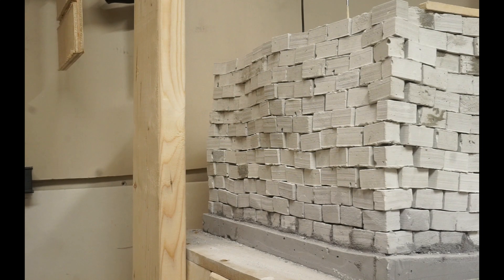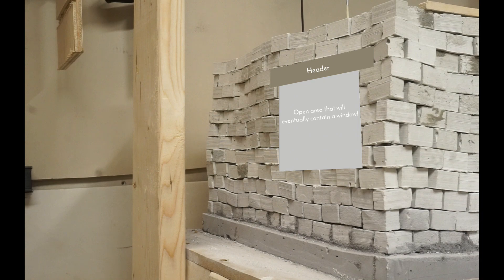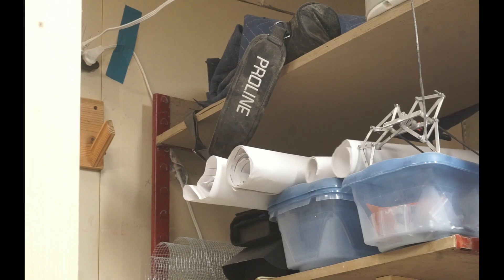There is still one type of specialty block I need: a header. This is a really long block that goes above each window and door to distribute the load above around the opening. I need to make a decent amount of these. There are more than a few openings around the perimeter of the foundation. Actually, let me show you the plans.